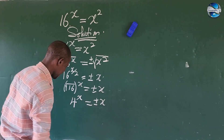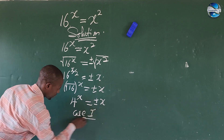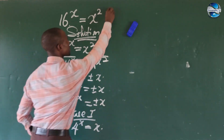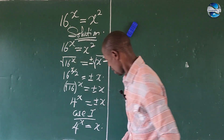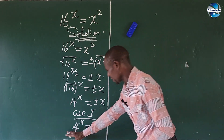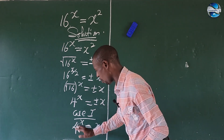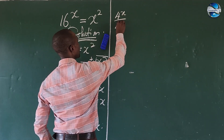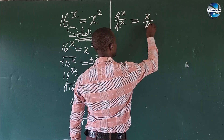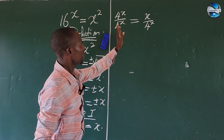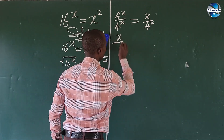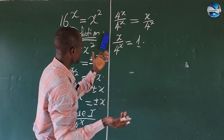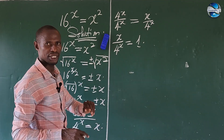So we now have Case 1 and Case 2 from here. Let's take Case 1. In Case 1 we have 4 to the power of x equal to x. Let's solve for the value of x in this expression. I want to make this side to be unity, so I will divide both sides by 4 to the power of x. This gives us 4^x over 4^x equal to x over 4^x, which simplifies to 1. So moving terms, we have x over 4^x equal to 1.